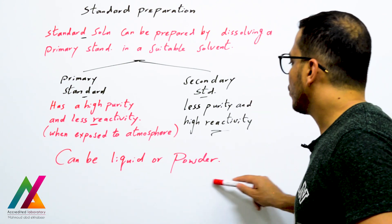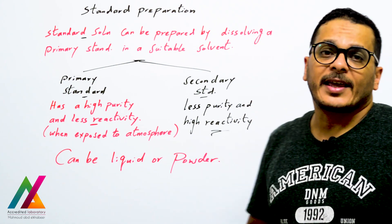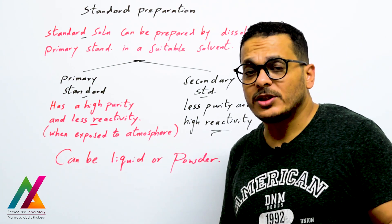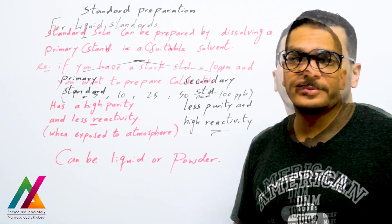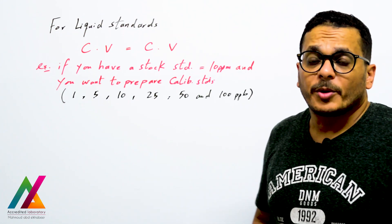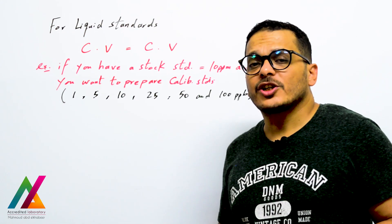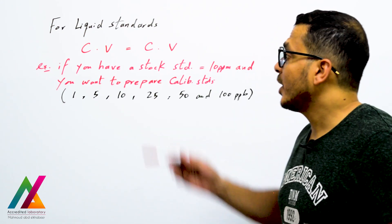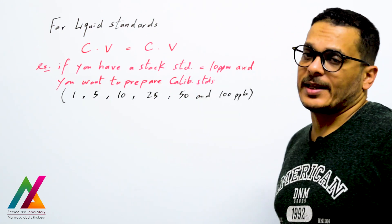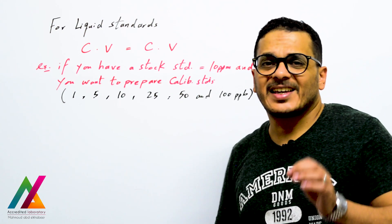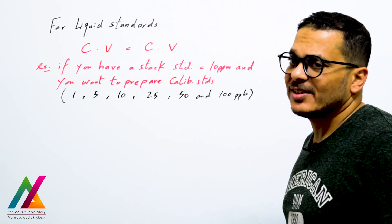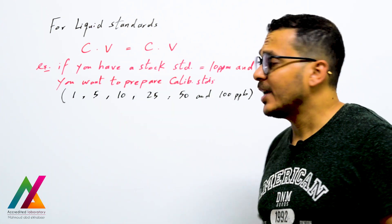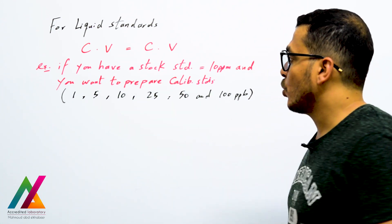Your standards can be liquid or powder. If you want to prepare your calibration standards from a liquid standard, in this case you will use the equation C₁V₁ = C₂V₂. Do you know this equation?